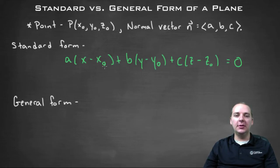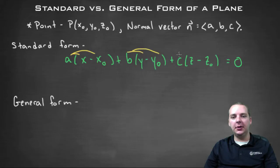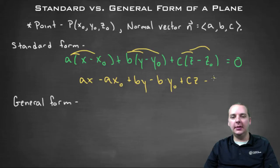Alright, well this is what's called standard form, but you can get to what's called general form by distributing the a, the b, and the c through, and kind of shuffling some terms around. So if you distributed these guys here, the a, the b, and the c, you'd have a x minus a times x-not plus b y minus b times y-not plus c z minus c times z-not equals zero.